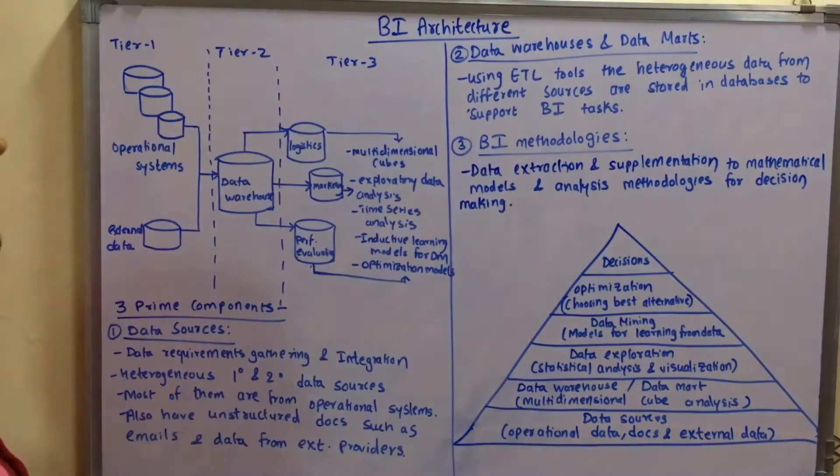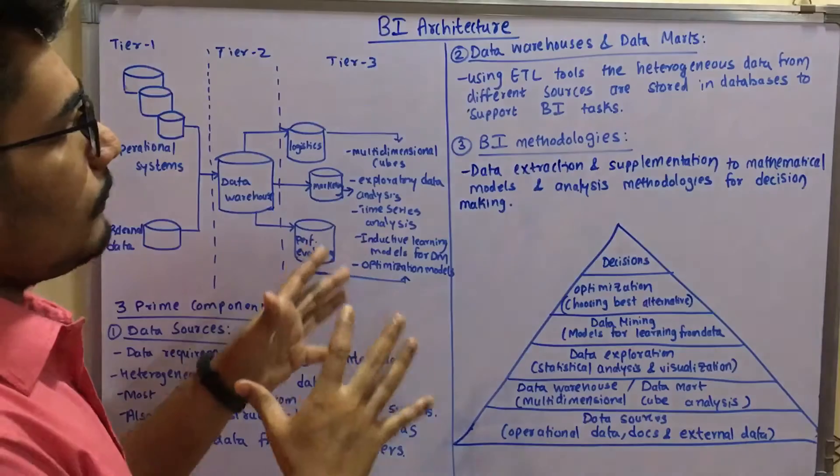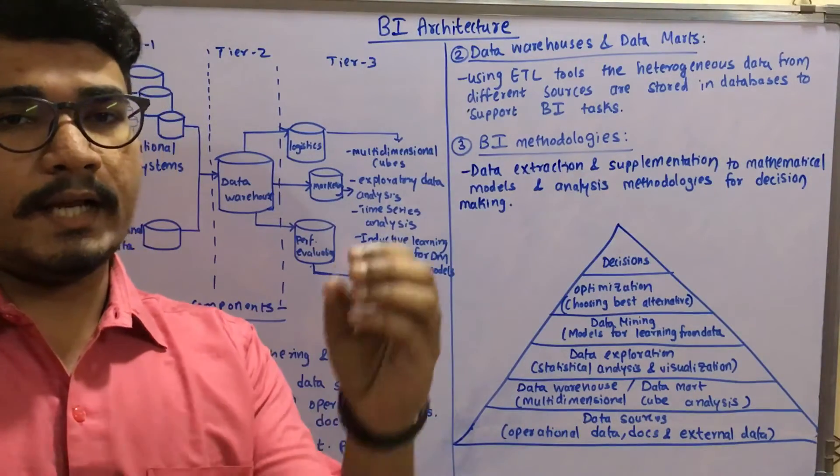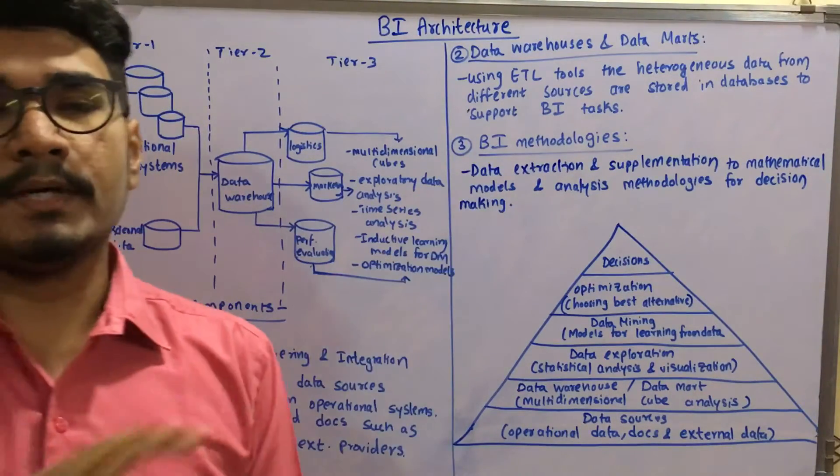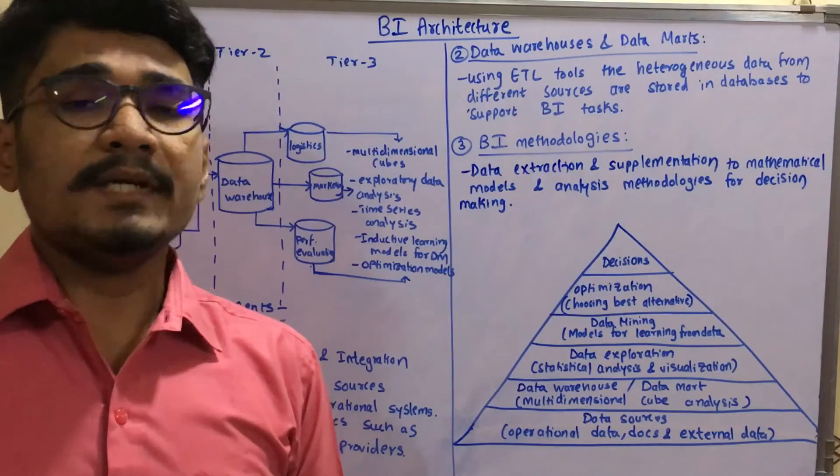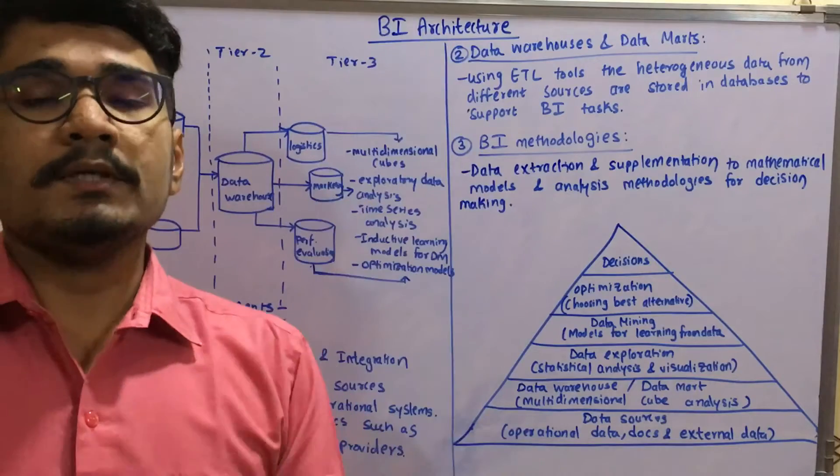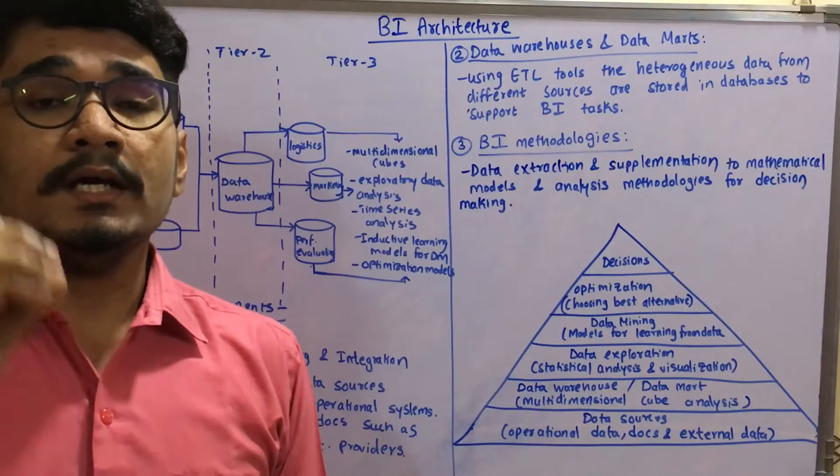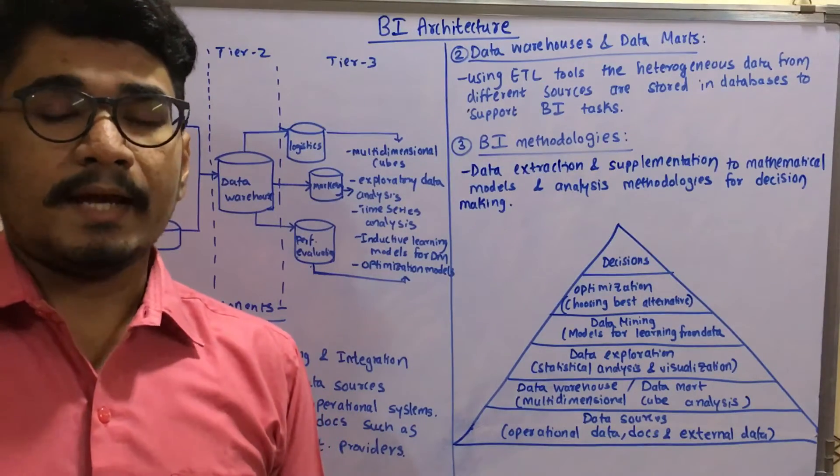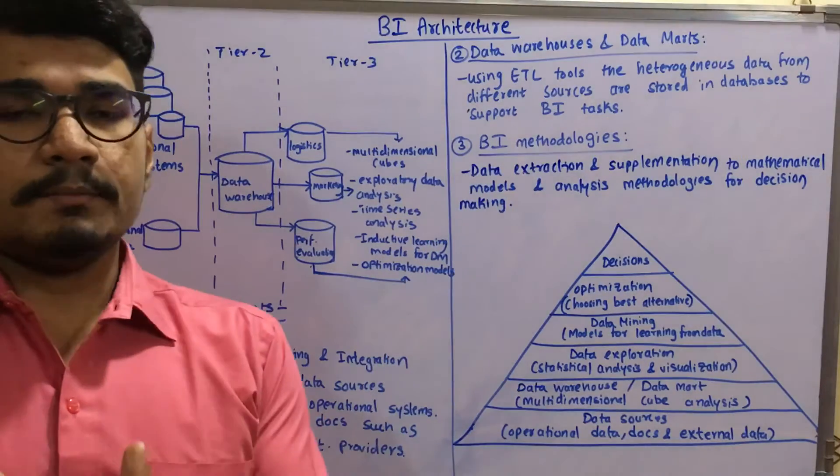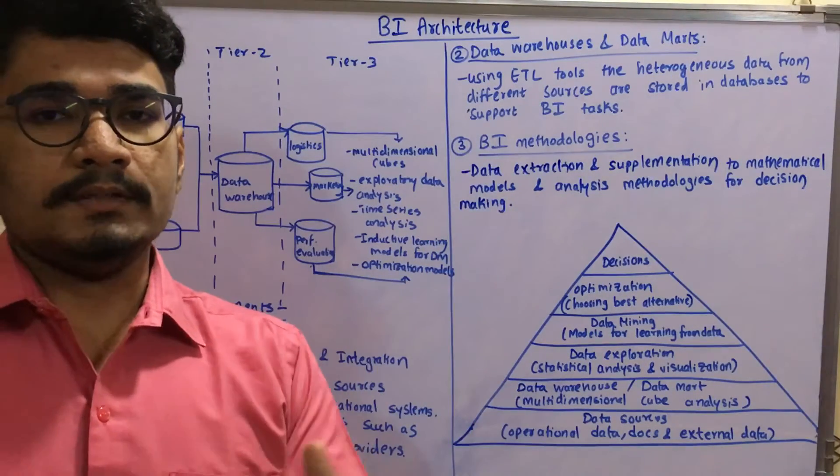Then we have the data warehouse and data mart. Data warehouse is nothing but it stores a unified schema of all the data. Like you have all the unstructured, semi-structured, multi-structured data from all the primary and secondary sources coming. What it does is it basically maintains a unified schema throughout. It maintains an index so that each particular user can access it very easily.